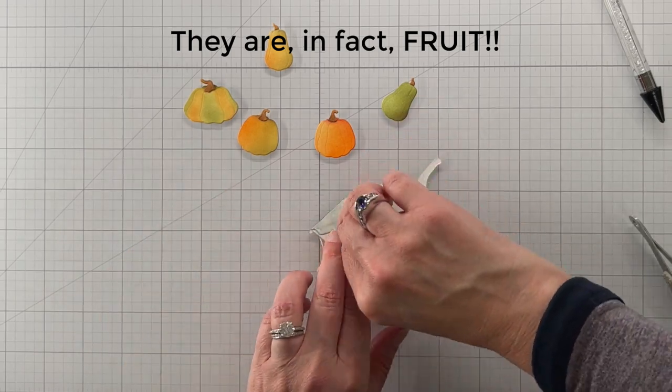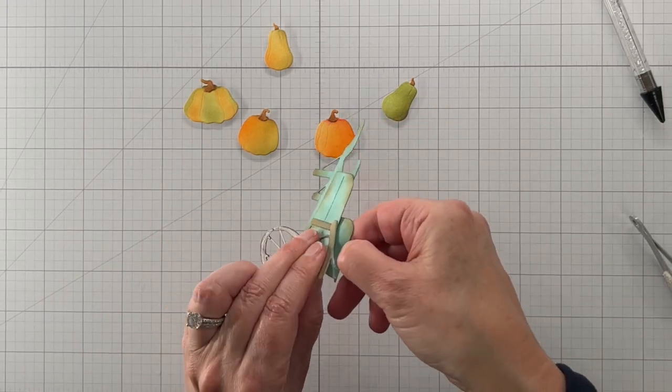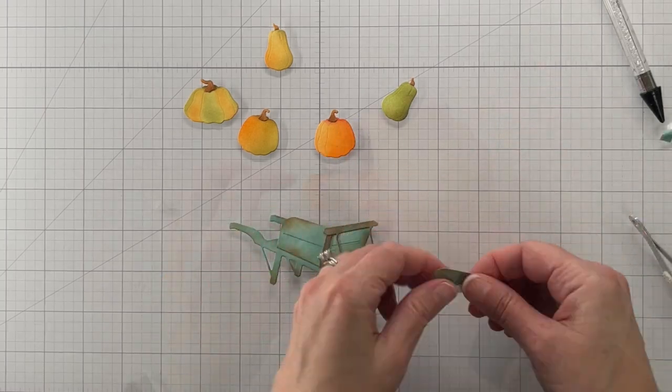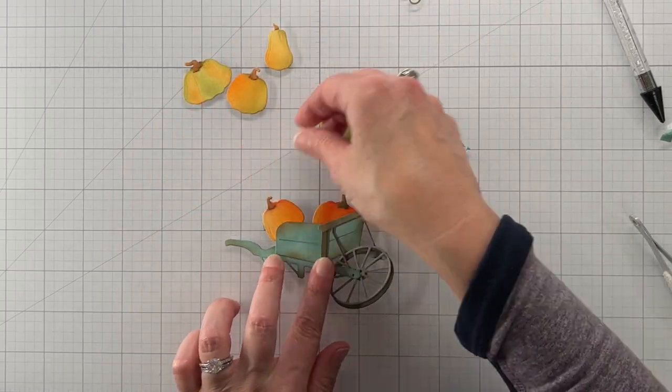All right so here's where I realized I glued that back on and it would be hard to stuff things into the wagon so I just pulled it off and not a big deal.